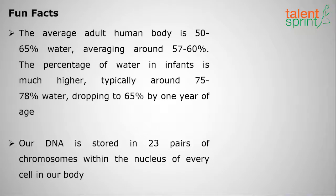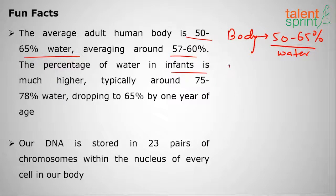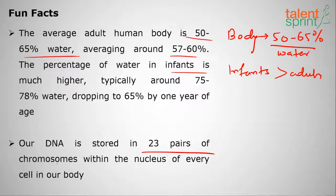Now for some fun facts about the human body. The average adult human body is 50 to 65 percent water — the average is around 57 to 60 percent, and infants have a higher percentage of water than adults. Our DNA stores 23 pairs of chromosomes within the nucleus of every cell in our body.